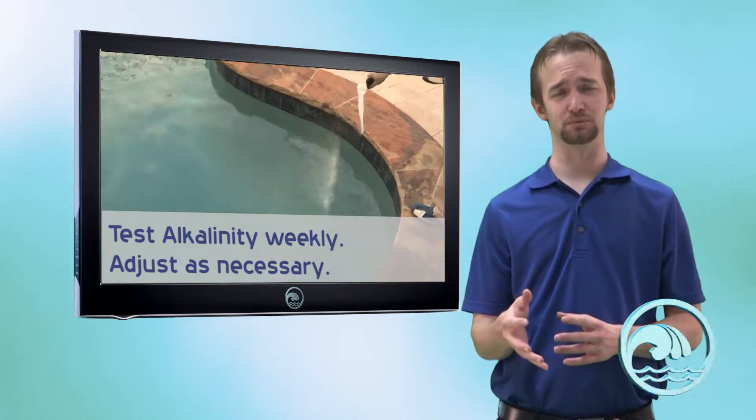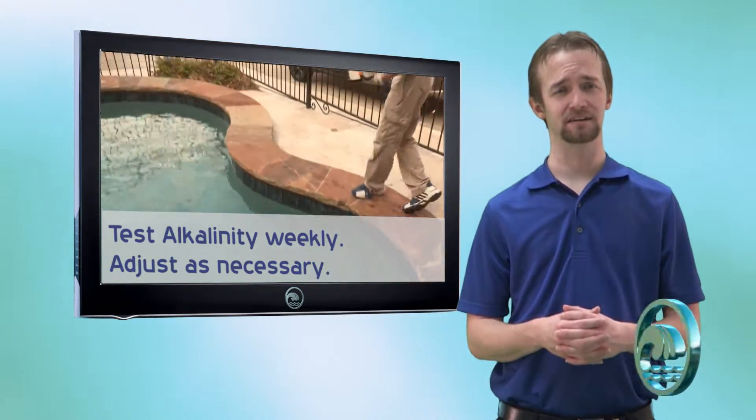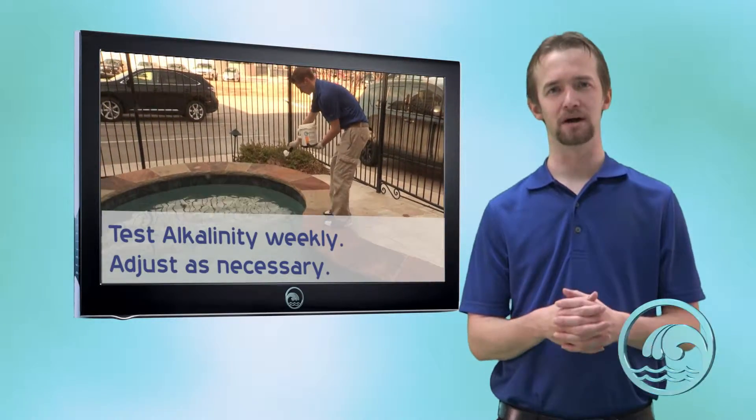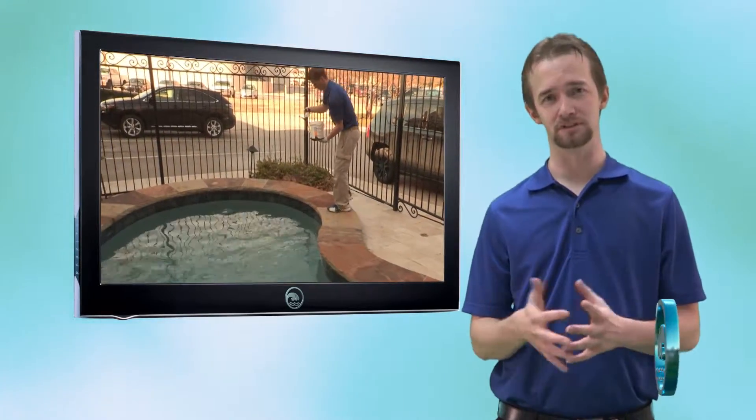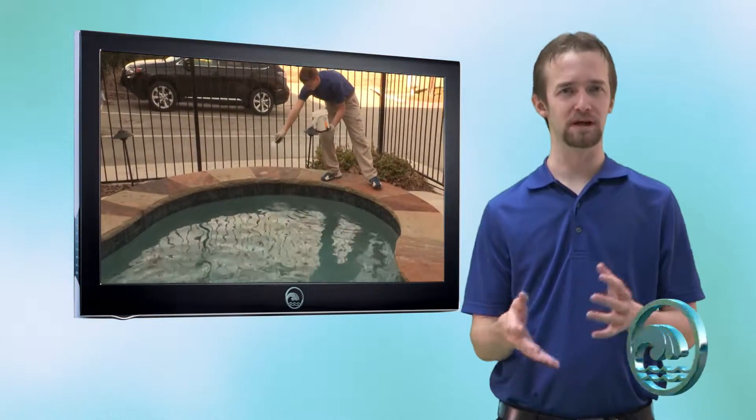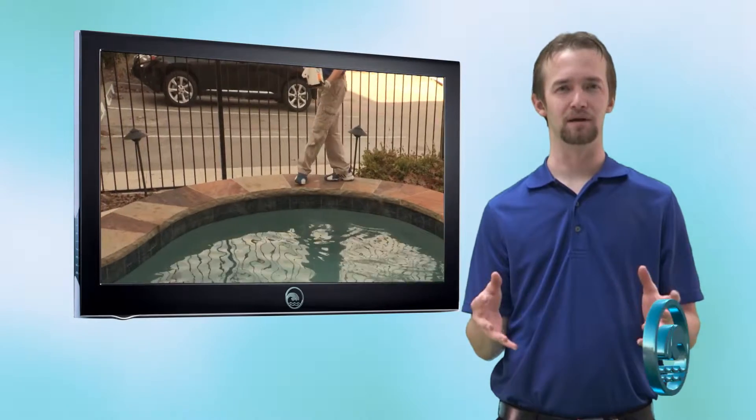Total alkalinity should be tested once a week and adjusted as necessary. If you do things right, total alkalinity should remain in range for about four to six weeks before you have to readjust. Under special circumstances like heavy rains and heavy use though, you may have to adjust alkalinity at a more frequent basis.